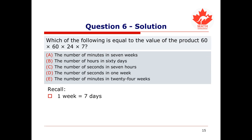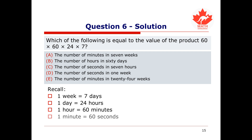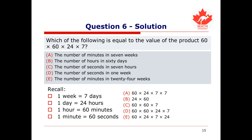Recall that each week has 7 days, each day has 24 hours, each hour has 60 minutes, and each minute has 60 seconds. Let's match each option against the question. Option A is 60 × 24 × 7, option B is 24 × 60, option C is 60 × 60 × 7, option D is 60 × 60 × 24 × 7, and option E is 60 × 24 × 7 × 24. The expression shown in the question matches option D.